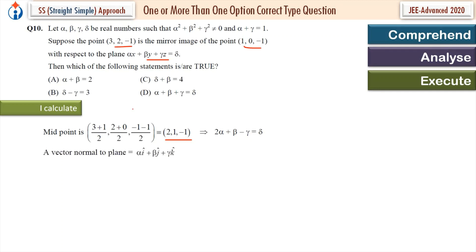My vector normal to the plane is αi + βj + γk. Vector joining this point and this point is 2i + 2j. These two vectors are parallel. So γ = 0 and α = β.